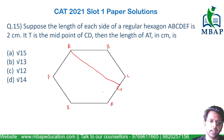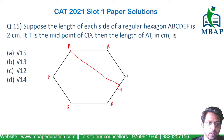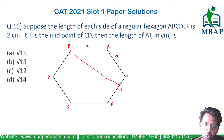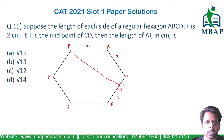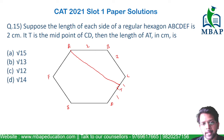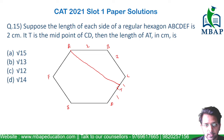AT is the length we have to find. AB is known to be 2 and BC is also known as 2, because each side is 2 centimeters. So CT will be 1 and DT will be 1. We also know the internal angle in a regular hexagon is 120 degrees each.